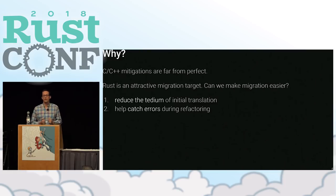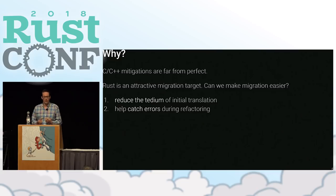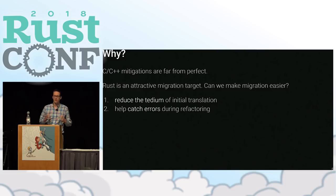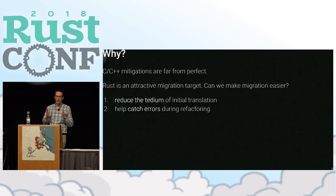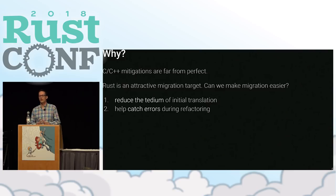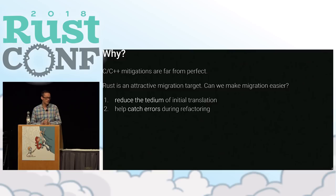I have a background in working on C and C++ exploit mitigations, where we try to change the way we compile C and C++ code. You can do something to take the lowest hanging fruit off the table for adversaries, but in the end the pattern is that you come up with a new exploit mitigation, and then the adversaries find another way around it. So it's an arms race, really. Rust is an attractive migration target — it provides not just type and memory safety, but also freedom from data races. That's like catnip to people who have written a lot of C and C++.